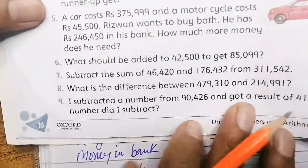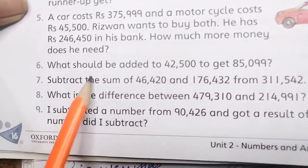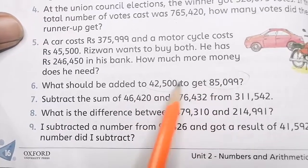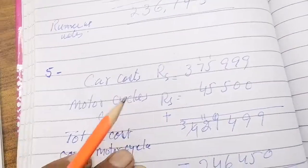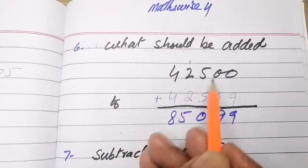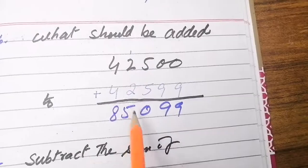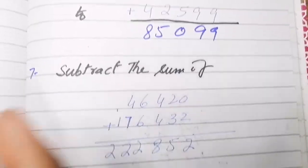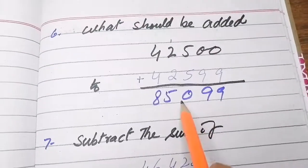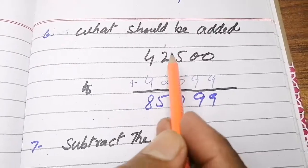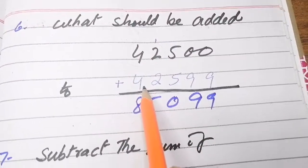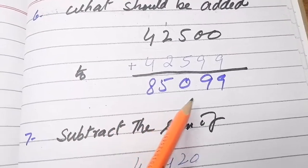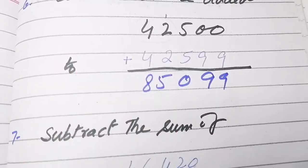Question 6: what should be added to 42500 to get 85009? One number and the total are given; find the second number. Just as in Exercise 11, subtract the given number from the total: 85009 minus 42500 gives you the second number — that is what needs to be added.